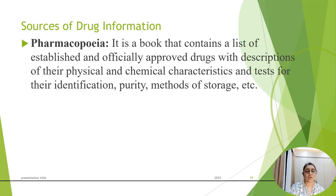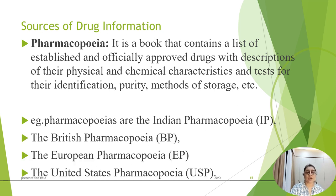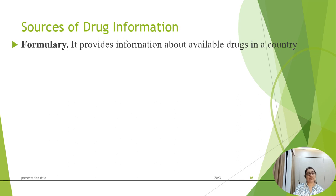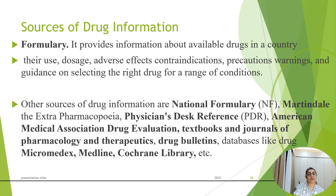Sources of drug information include the pharmacopoeia, which is a book containing a list of officially approved drugs and descriptions of their physical and chemical characteristics, tests for their identification and verification, and methods of storage. Examples include the Indian Pharmacopoeia, British Pharmacopoeia, European Pharmacopoeia, and United States Pharmacopoeia. Another source is the formulary, which provides information about available drugs — including dosage, formulation, adverse drug reactions, contraindications, indications, precautions, warnings, and guidance on selecting the right drug. Other sources include national formularies, Martindale, and the Physician's Desk Reference.